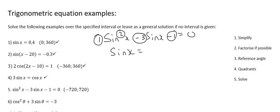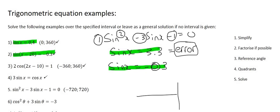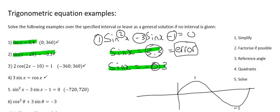The two answers are: sin x equals 3.3 and sin x equals negative 0.3. Each of these becomes a brand new separate question. For sin x equals 3.3, your next step would be to get a reference angle by saying shift sin 3.3, but you're going to get an error. That's perfectly fine — a sin graph has a maximum value of 1 and minimum of minus 1, so there is no way it can equal 3.3. For that one you simply say no solution.